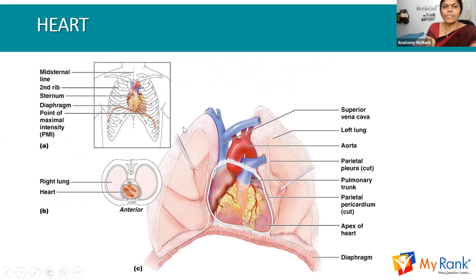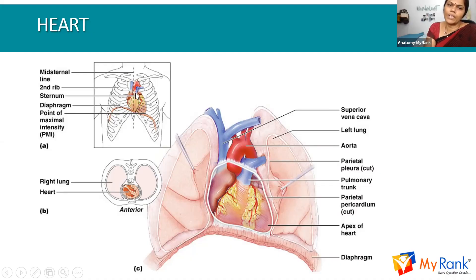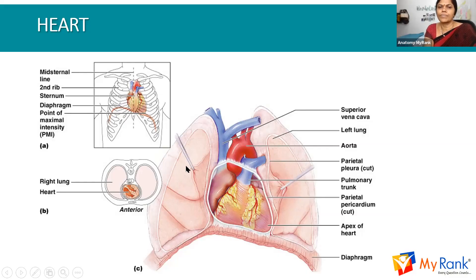You can see the situation of the heart here — this is the apex and the whole upper part is the base. It is a point of maximal intensity, above the diaphragm, beneath the sternum, and in front of the vertebrae. You can see the chambers: the base is formed by the atria, and the left ventricle mainly forms the apex of the heart. This is the right ventricle, and this is the pulmonary trunk. Ascending aorta, arch of aorta, and descending aorta are visible. On either side you can see the lungs with pleural reflection. This is the superior vena cava.